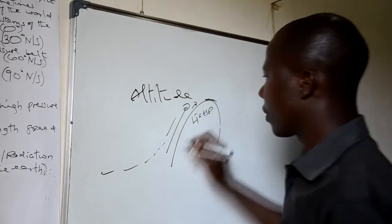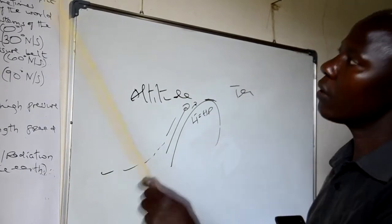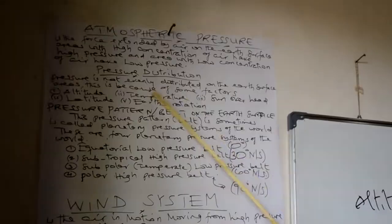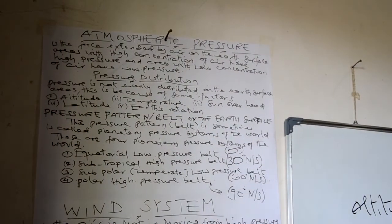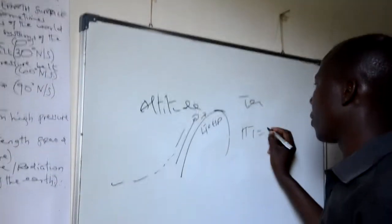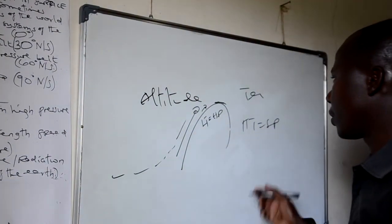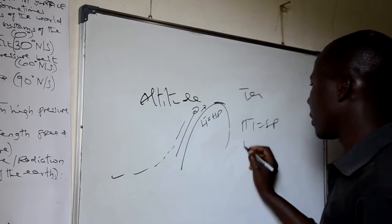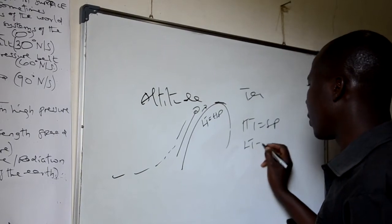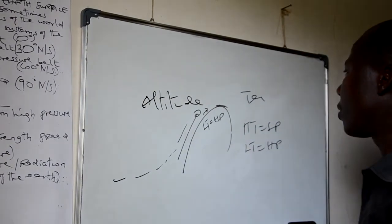Another factor is temperature. The places which have high temperature have low pressure, and vice versa. The area of high pressure has low temperature. If there is high pressure, therefore the temperature will be low.